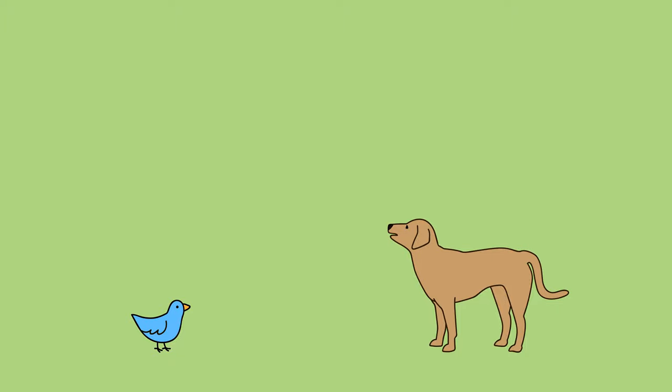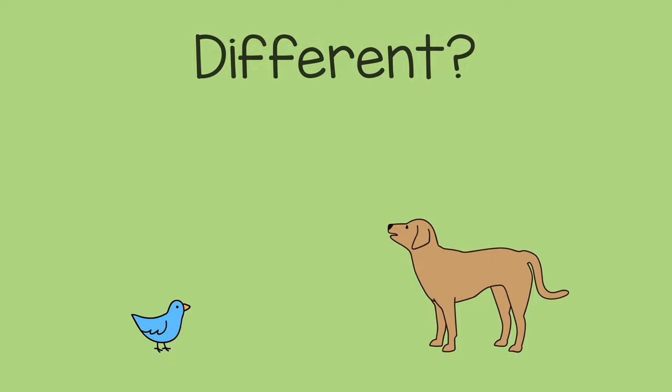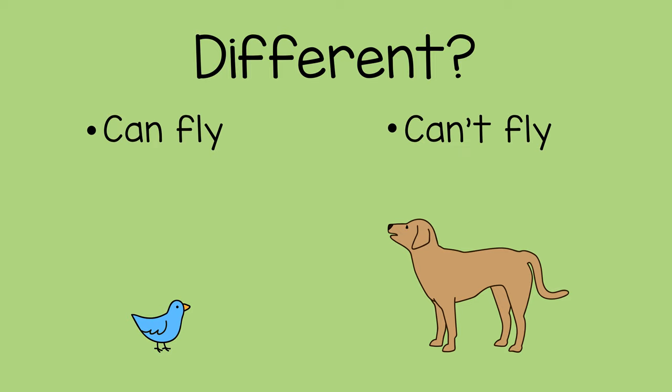Then you can ask, how are they different? The child might say, a bird can fly and a dog can't. You could say, a bird has feathers and a dog has fur.